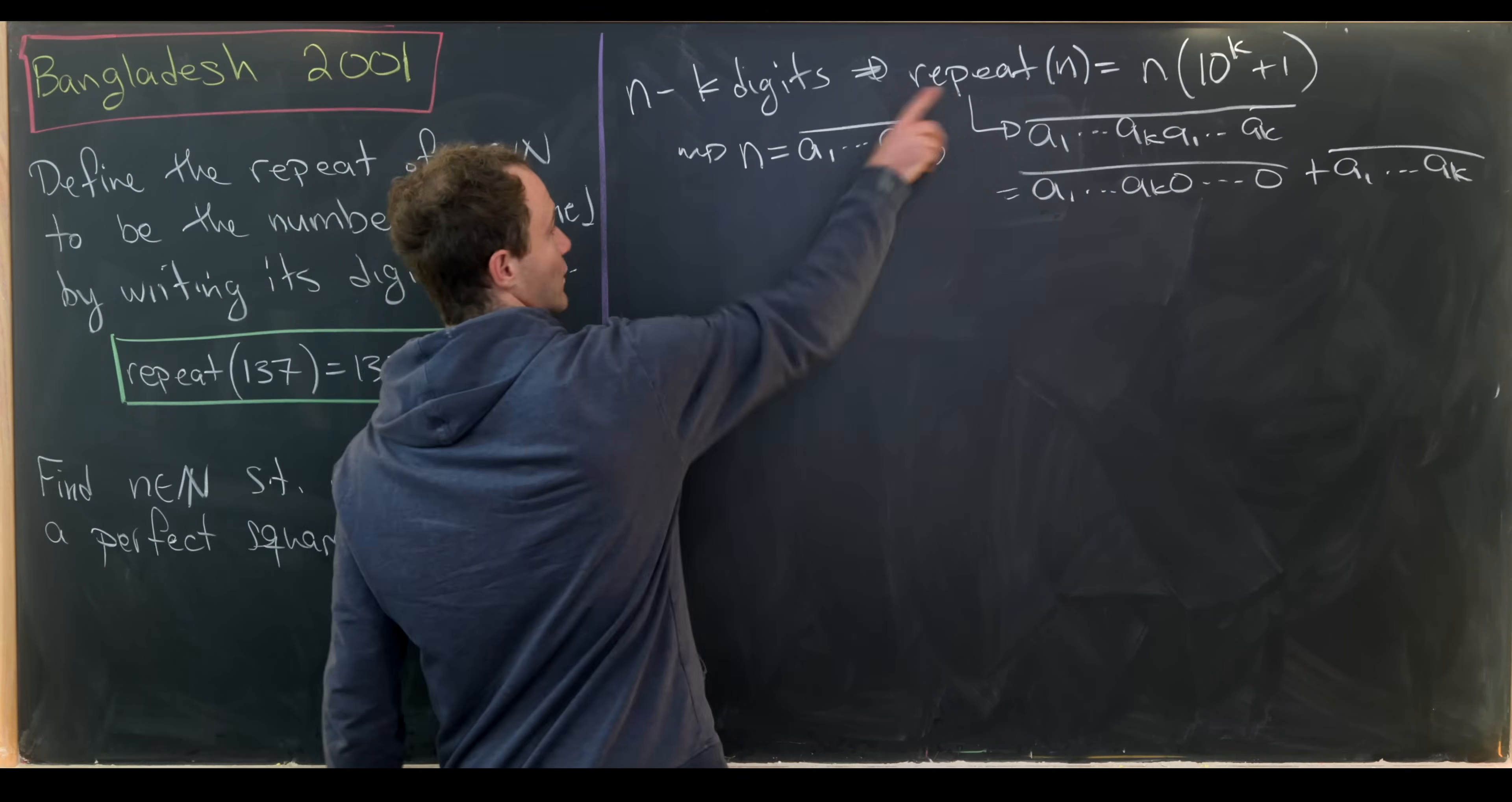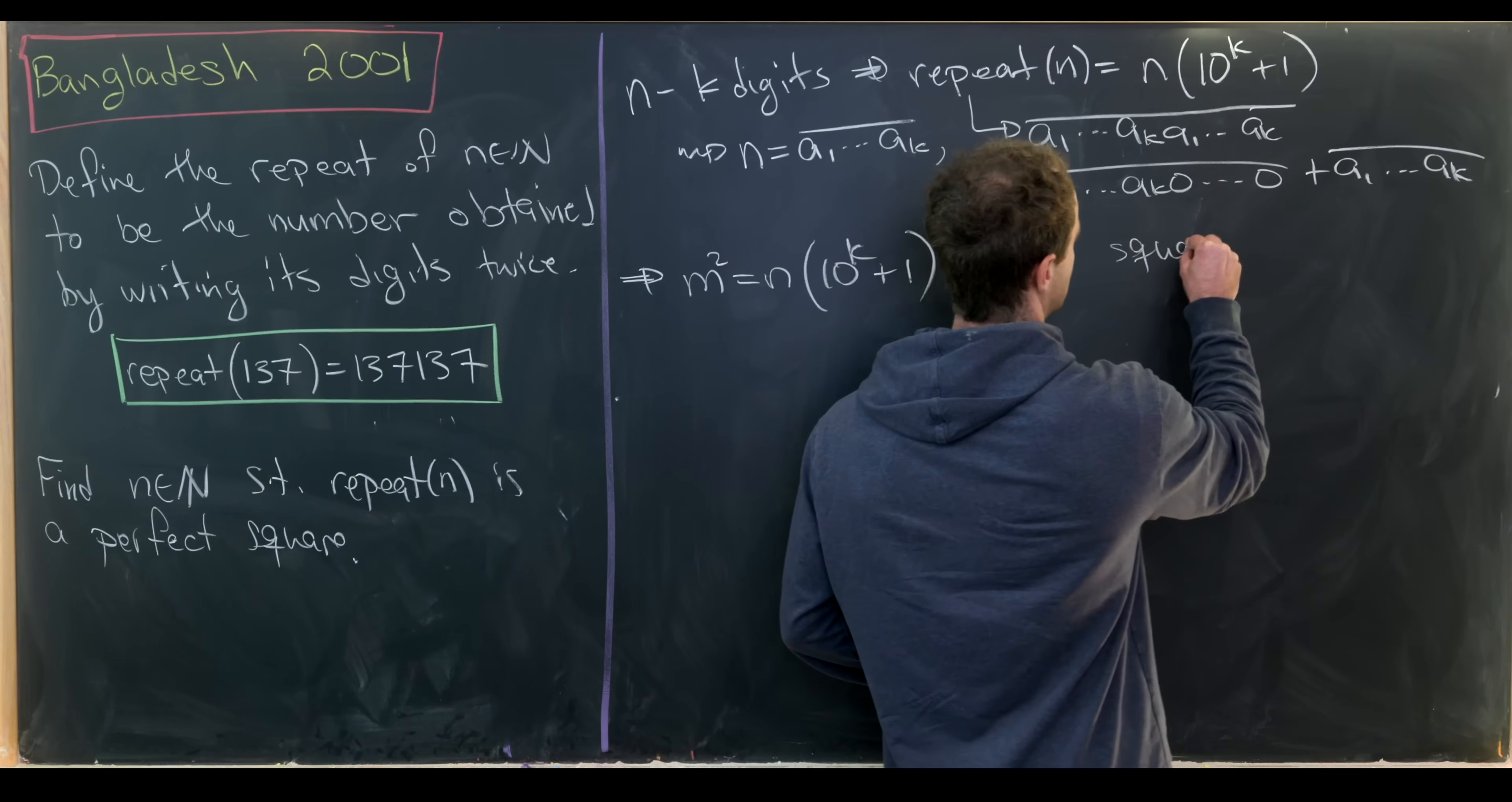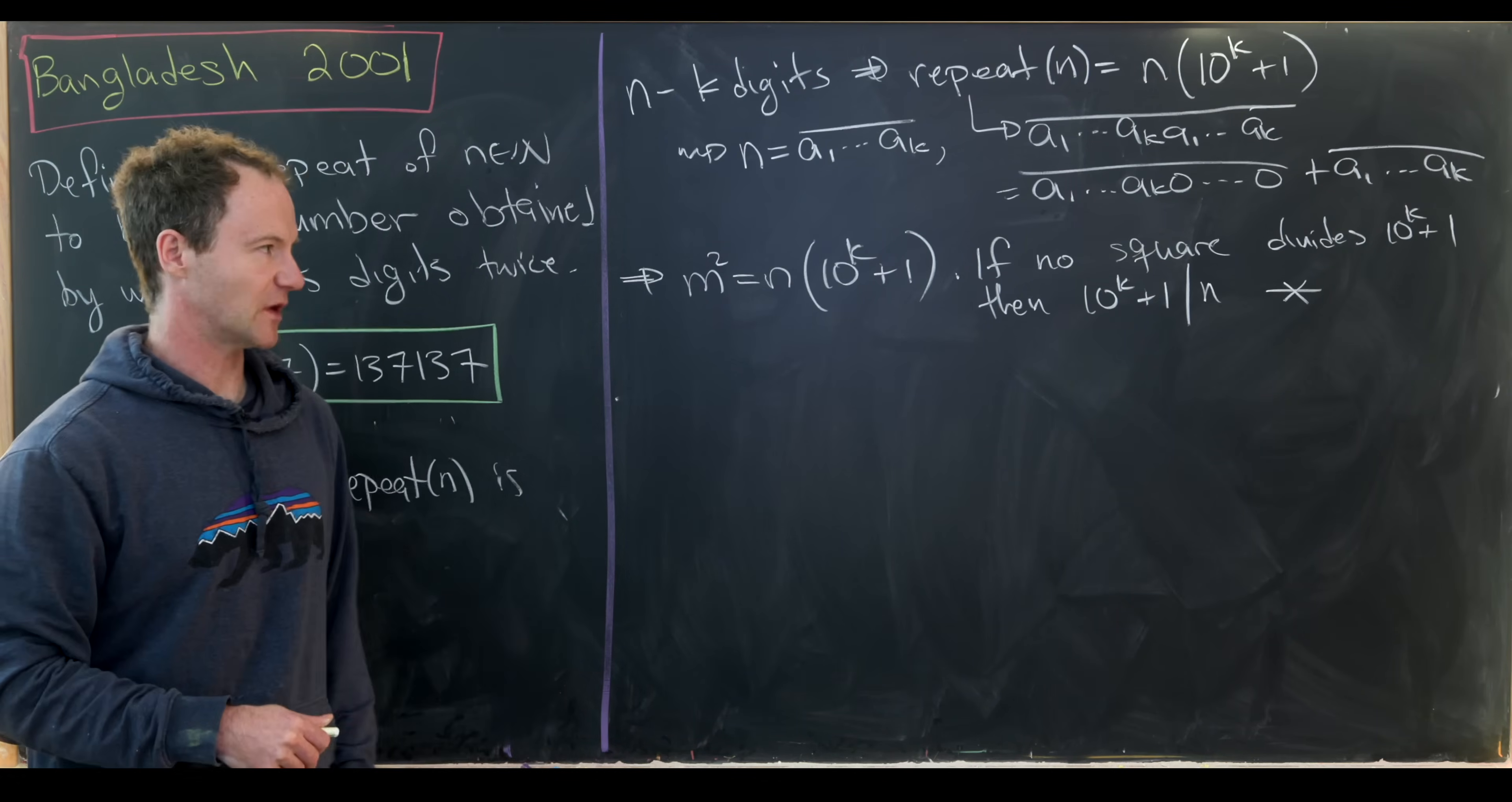So if we have the repeat of n as a perfect square, then that means we have m squared is equal to n times 10 to the k plus 1. And now from those first examples we just looked at, we noticed that if no square divides this 10 to the k plus 1, then 10 to the k plus 1 in fact divides into n, which is a contradiction. So again, that's just doing a little more general of a case of the stuff that we just saw.